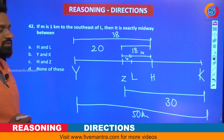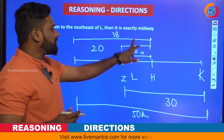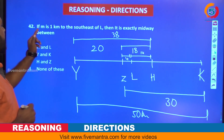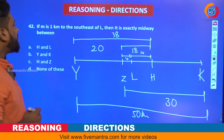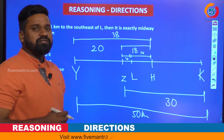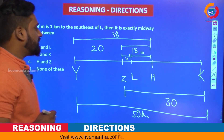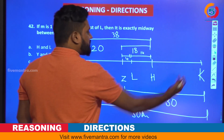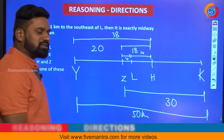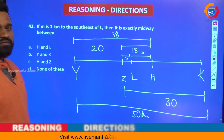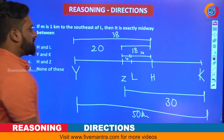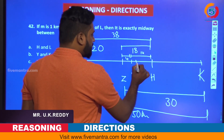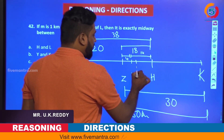The total becomes 18; 4 plus 4 is 8. Now the question says: if M is 1 kilometer to the southeast of L — southeast means this direction — so from L, M is 1 kilometer away. That means somewhere here you have M at 1 kilometer distance.